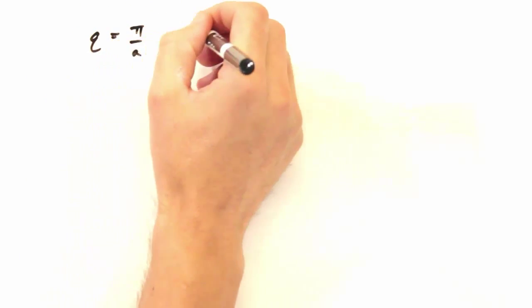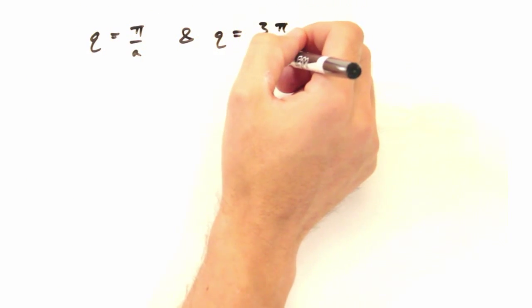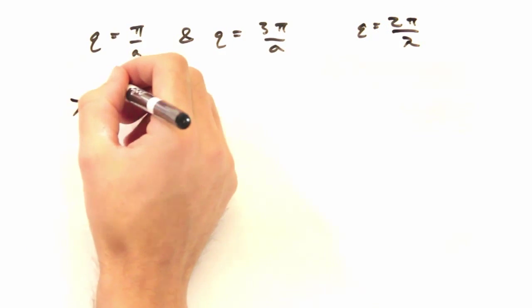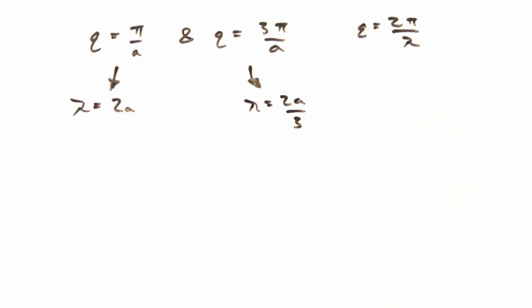So I see how this works mathematically. Let's say I had a wave vector q at pi over a and one at 3 pi over a. This one corresponds to a wavelength of 2a and the other 2a over 3. You keep saying they're physically equivalent, but I'm just not seeing it.